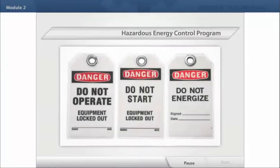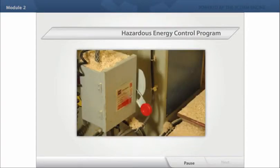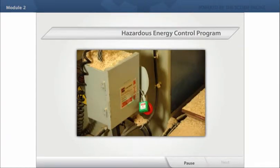Tags can be effective as a visible warning, but do not offer any substantial mechanical means of preventing the transmission or release of energy. An example of an effective isolating device would be levers or valves with aligning lock holes.